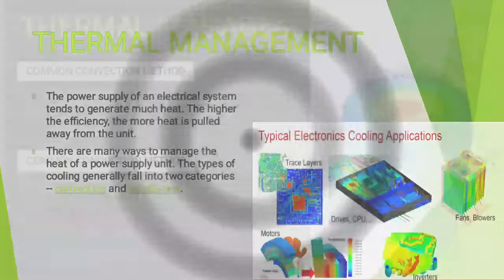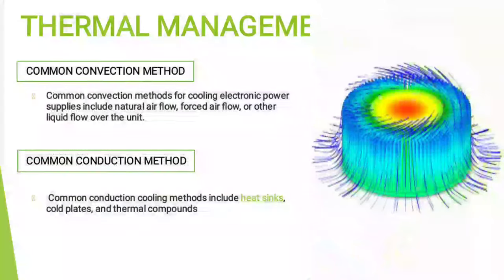Common convection methods for cooling electronic power supplies include natural airflow, forced airflow, or other liquid or electrical flow over the unit. Common conduction methods include heat sinks, cold plates, and thermal compounds.